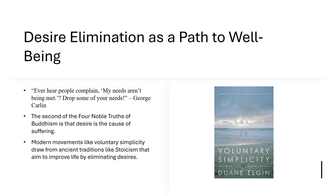This idea goes way back — there are plenty of ancient views like this. The second of the Four Noble Truths of Buddhism is that desire is the cause of suffering. Being so attached to wanting so many things causes so much suffering in life. It would be oversimplifying it to say that all desire is bad — you're supposed to desire enlightenment and all that sort of stuff. But the idea is that you should really reduce your attachment to so many things. Drop some of your needs, so that you don't suffer from not having them met. There are plenty of things that aren't as important as enlightenment and virtue.